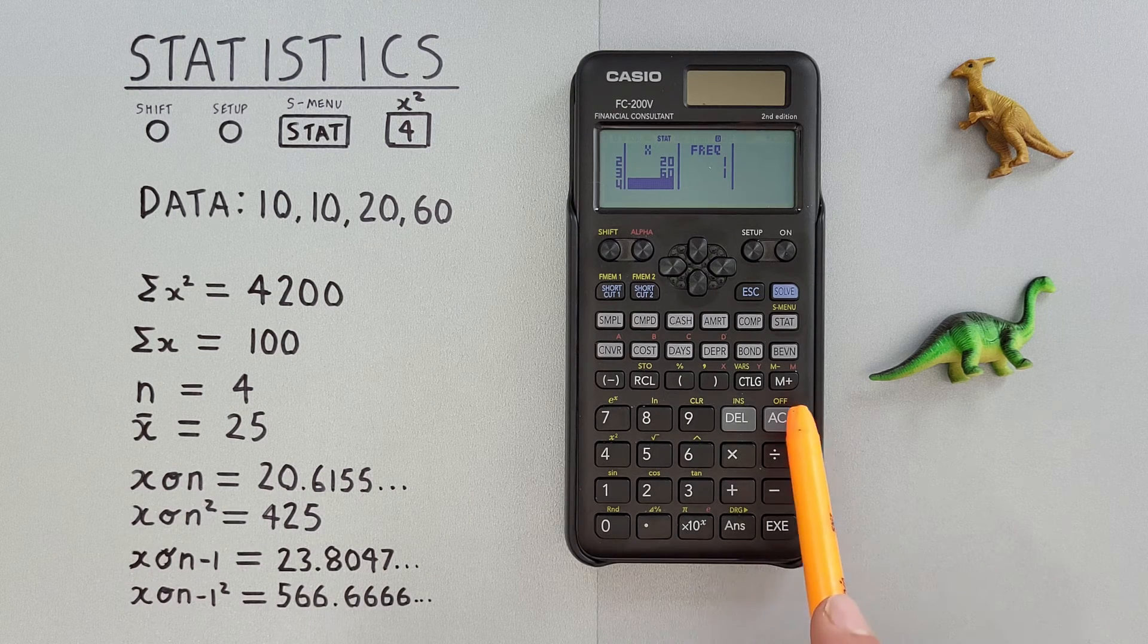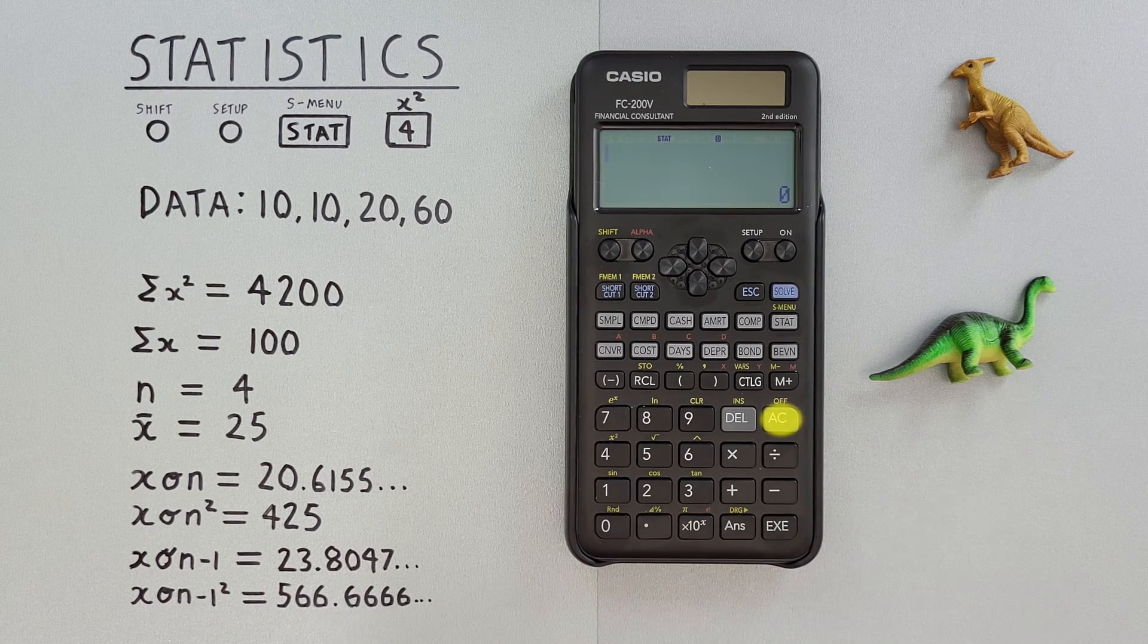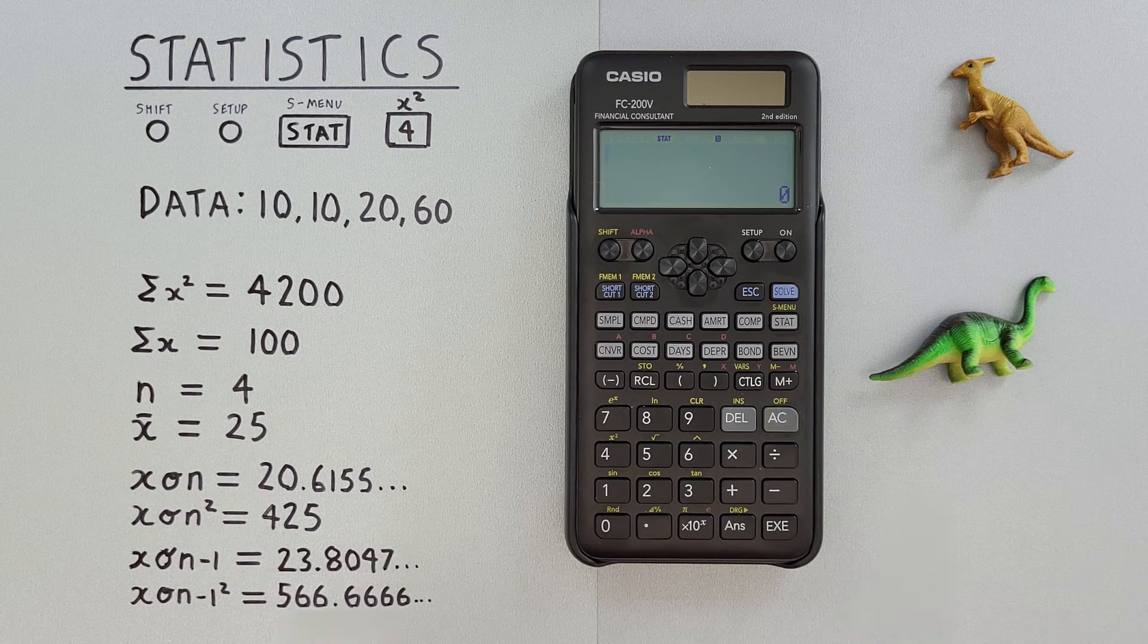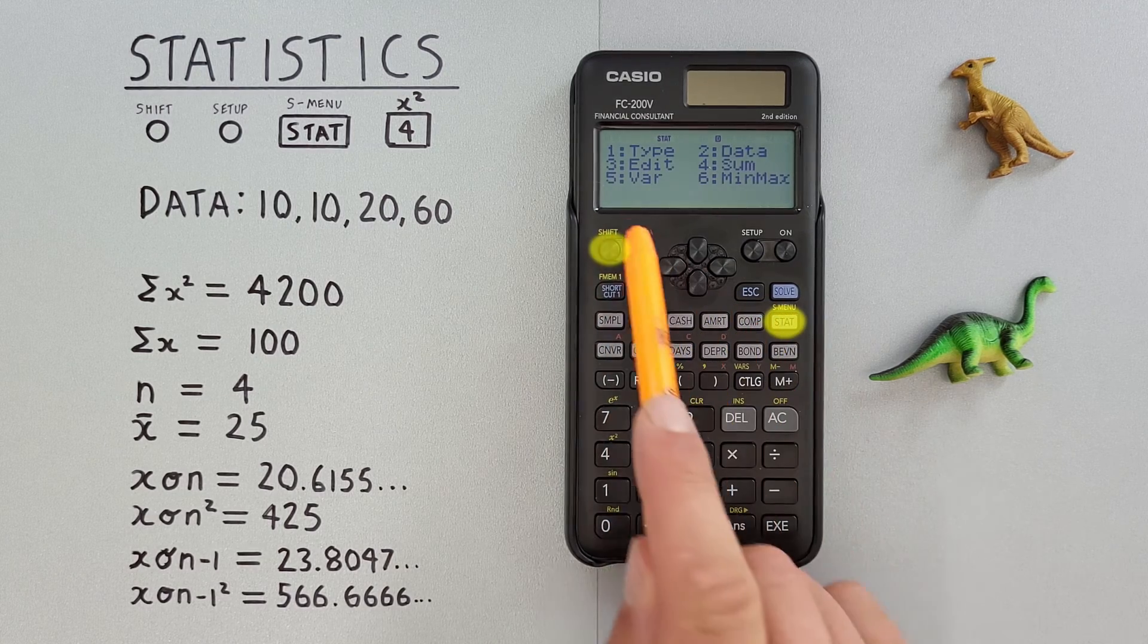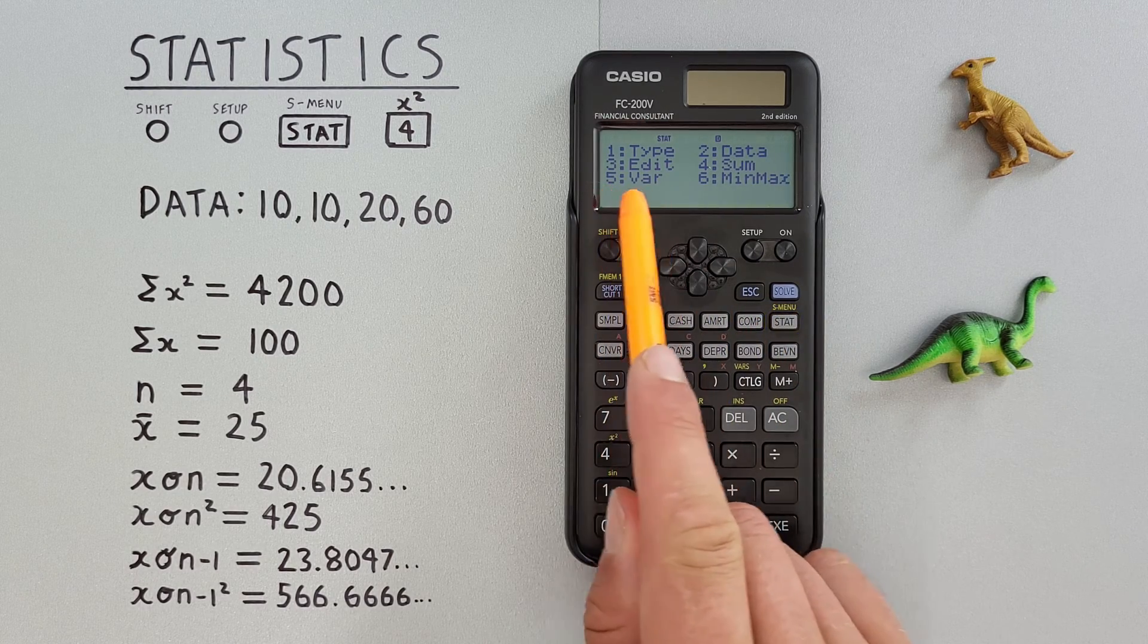Our data has been entered, and now we can clear out of that with the AC key again. Now if we go to our stat menu with shift stat and look at our variables, number five.